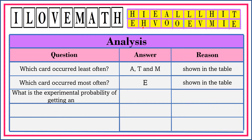What is the experimental probability of getting an I? If the question is experimental probability, let's refer our answer to the table. Let's count how many I's. We have 1, 2, 3. Therefore, the experimental probability of getting an I is 3 over 20. I occurred 3 times out of 20 repetitions.